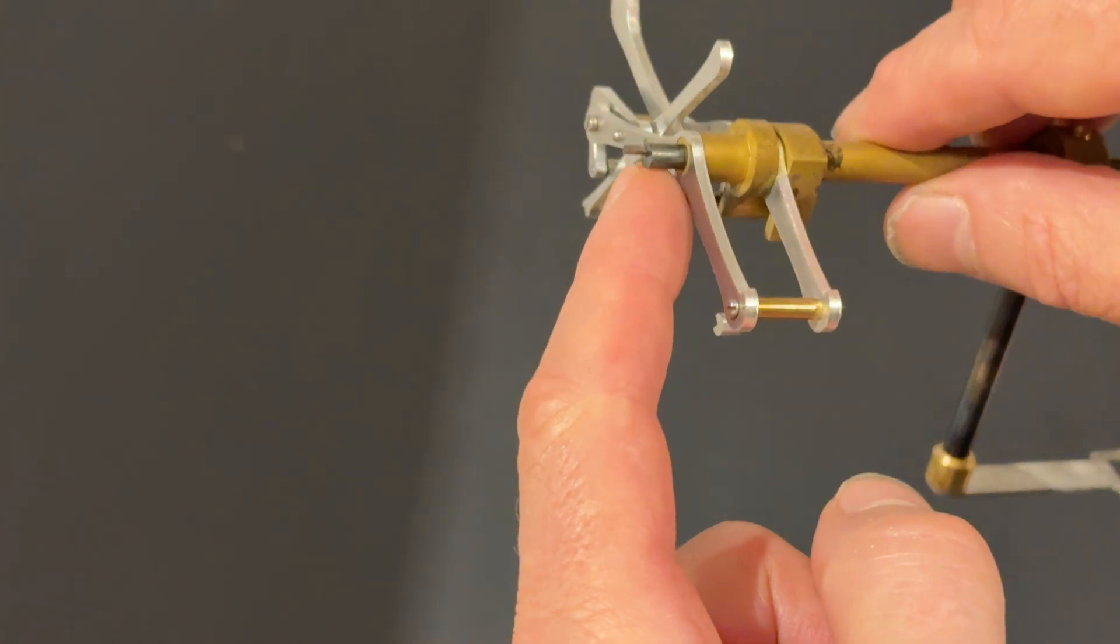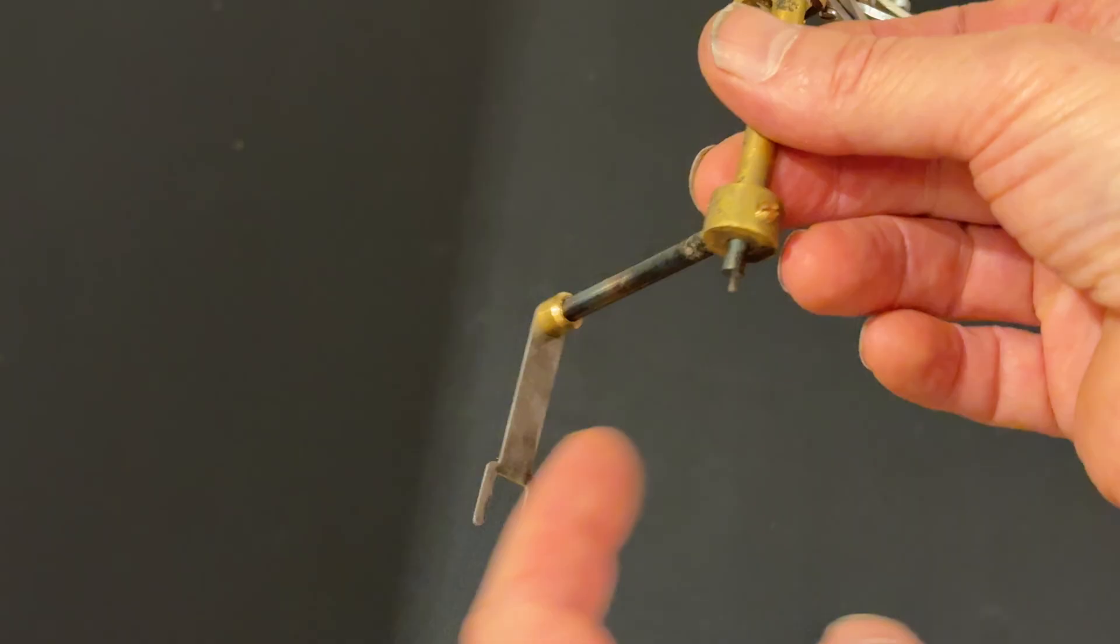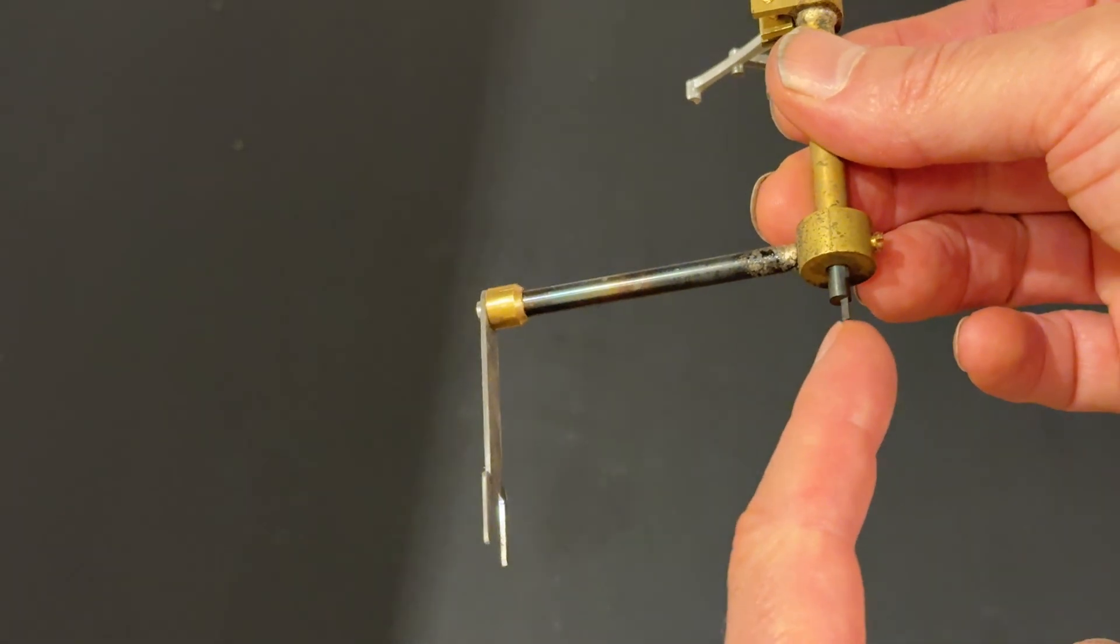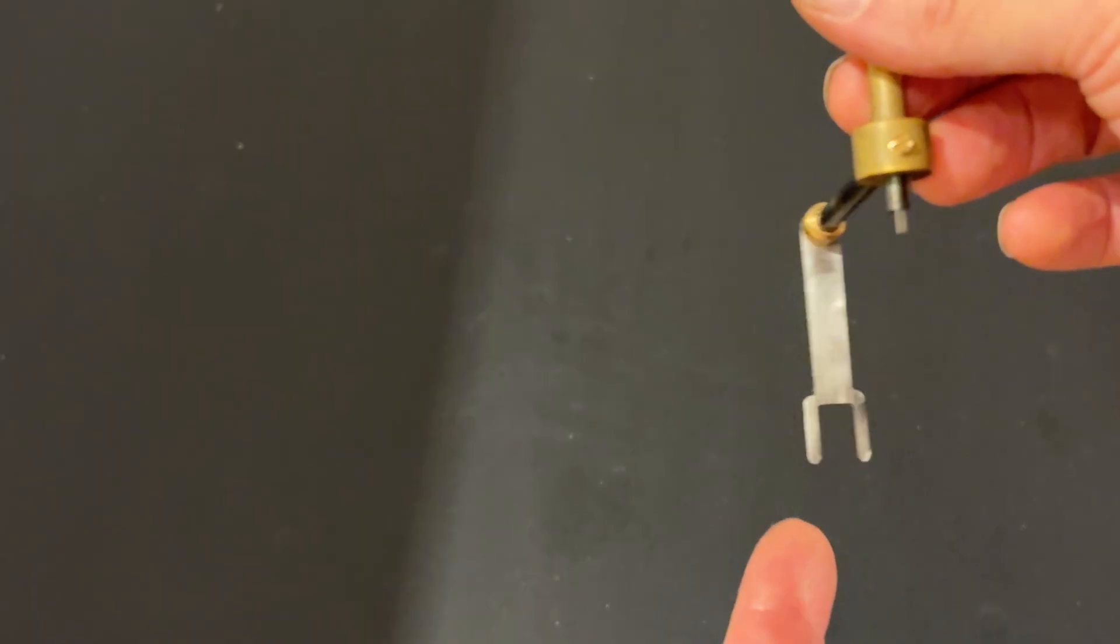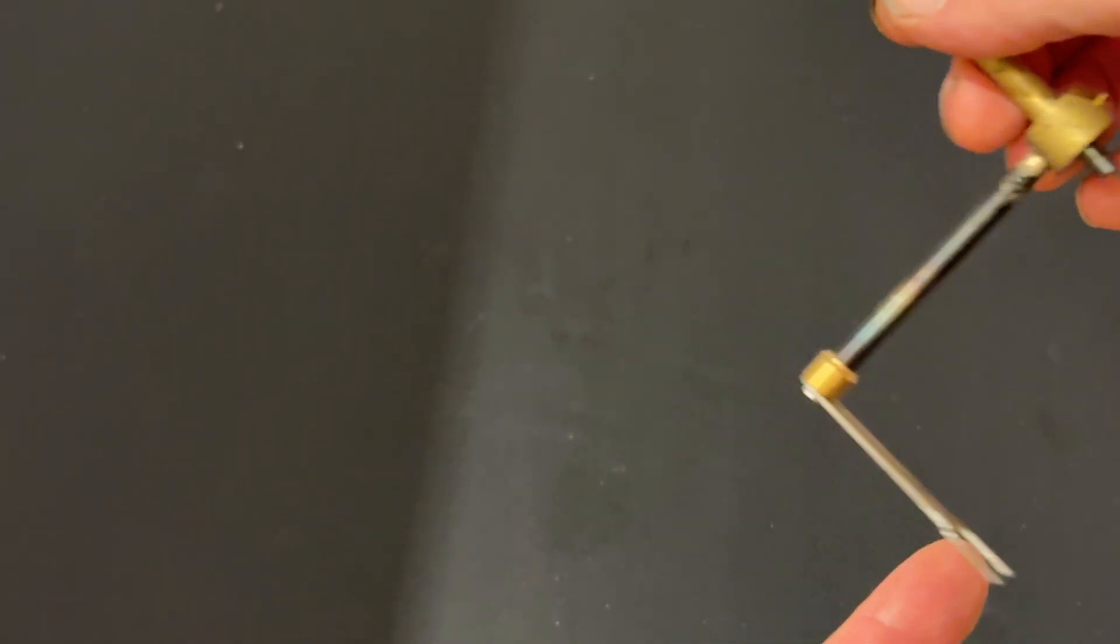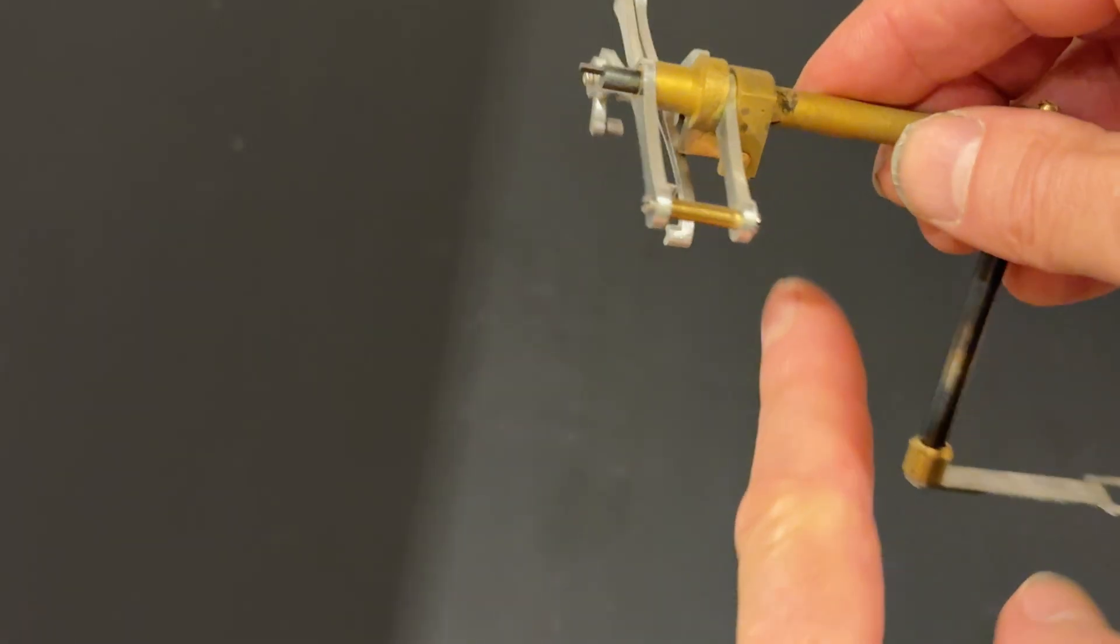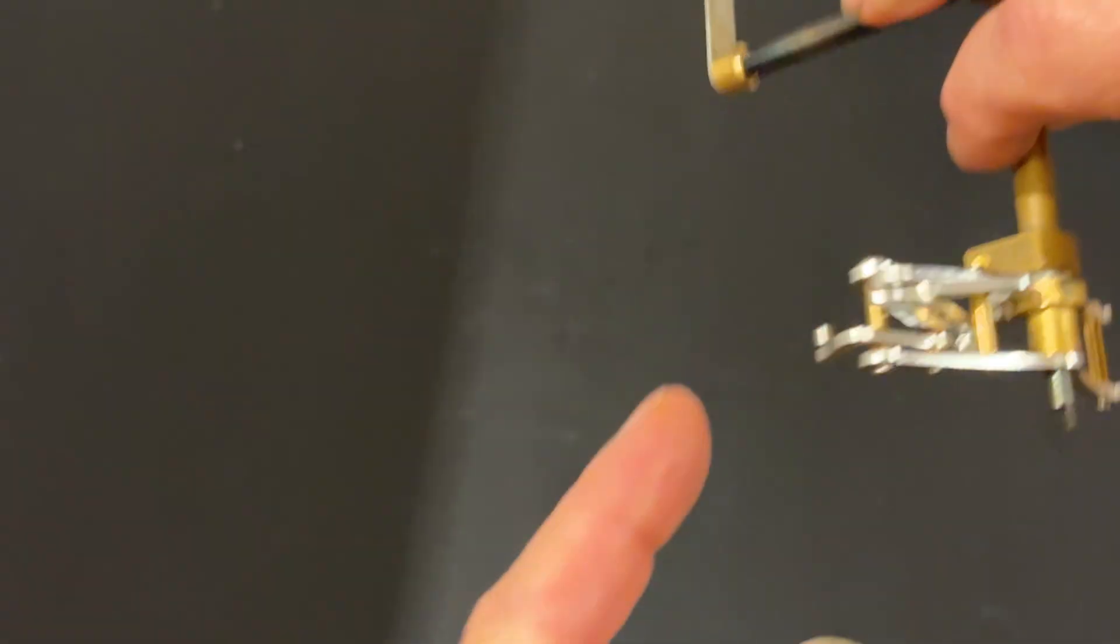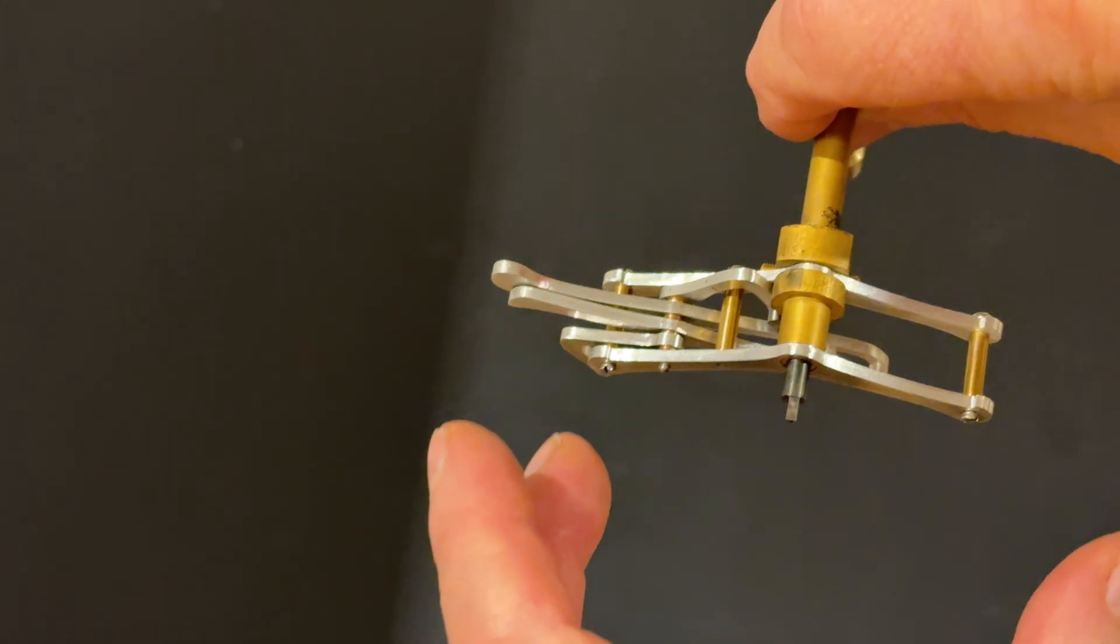We've got a knife edge bearing at the front and a corresponding knife edge at the back which runs in v-grooves in the clock and here's the crutch and here you've got the beat adjustment points on either side. So you loosen one screw, tighten the other and it just tilts the grasshopper relative to the crutch.